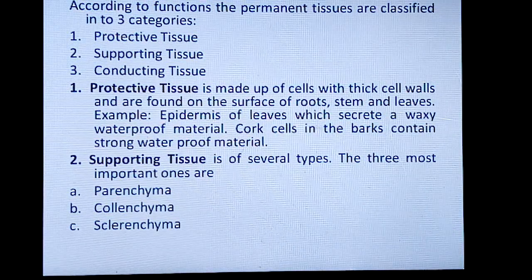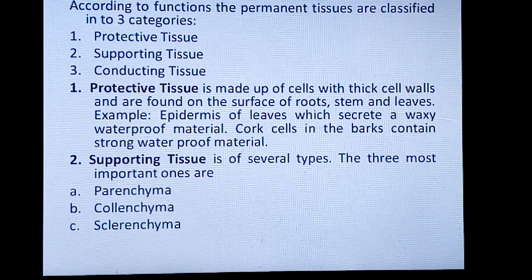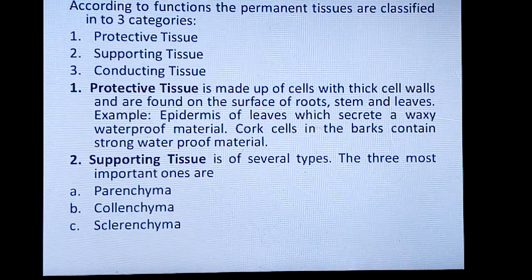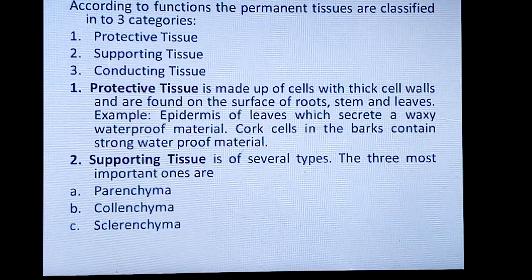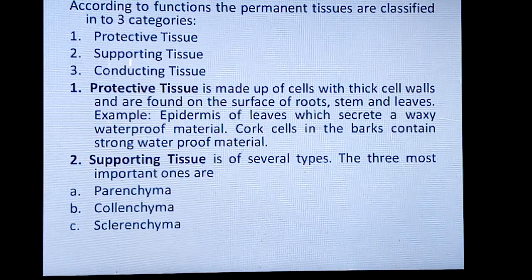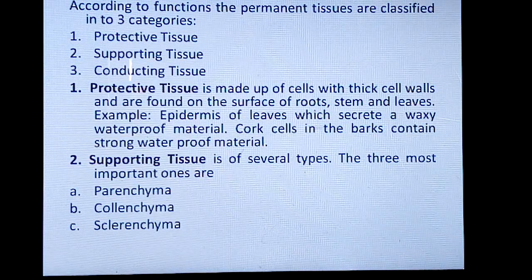Protective tissue is made up of cells with thick cell walls and is found on the surface of roots, stems, and leaves. You might have seen beetle leaves or banyan leaves — on them you will see a waterproof, shining surface. The leaves of ficus trees and banana leaves also have this shining surface. That is all made up of protective tissue, namely the epidermis of leaves, which secretes a waxy waterproof material.